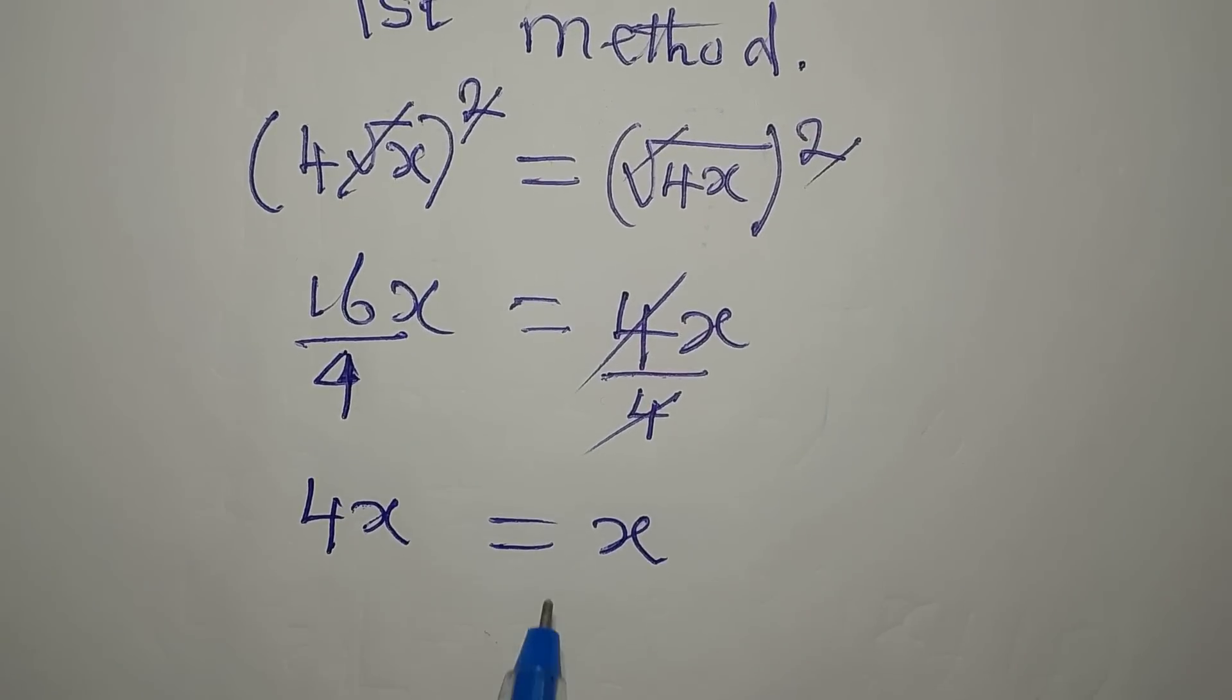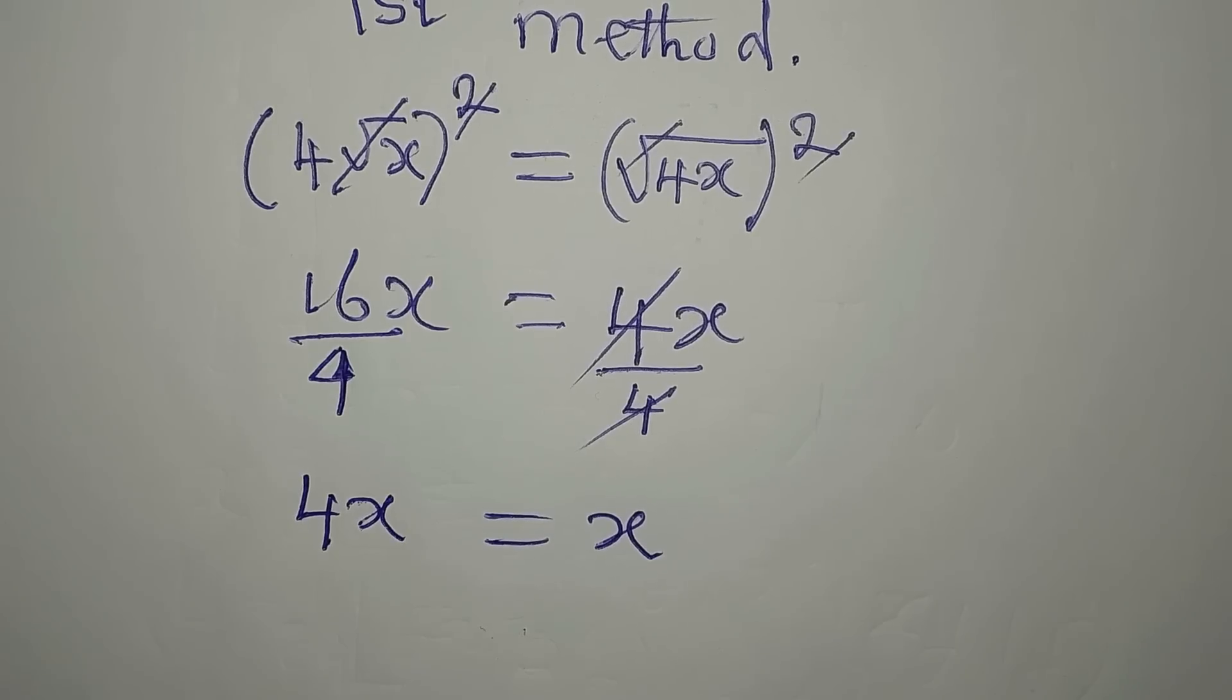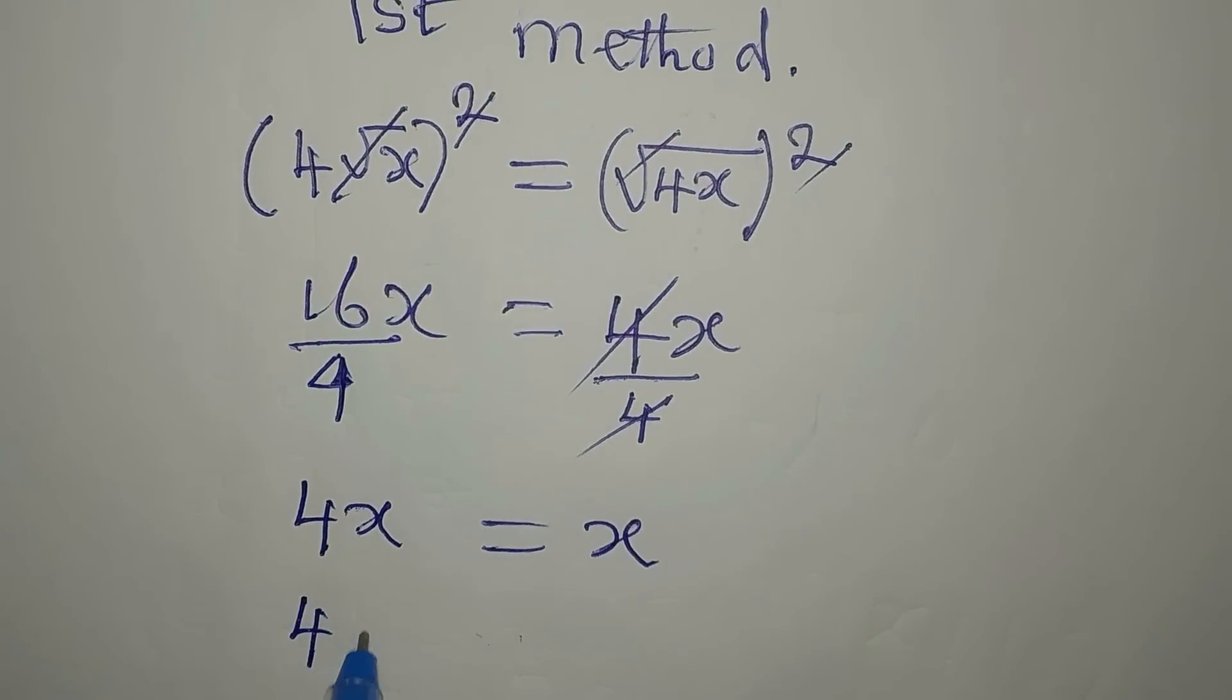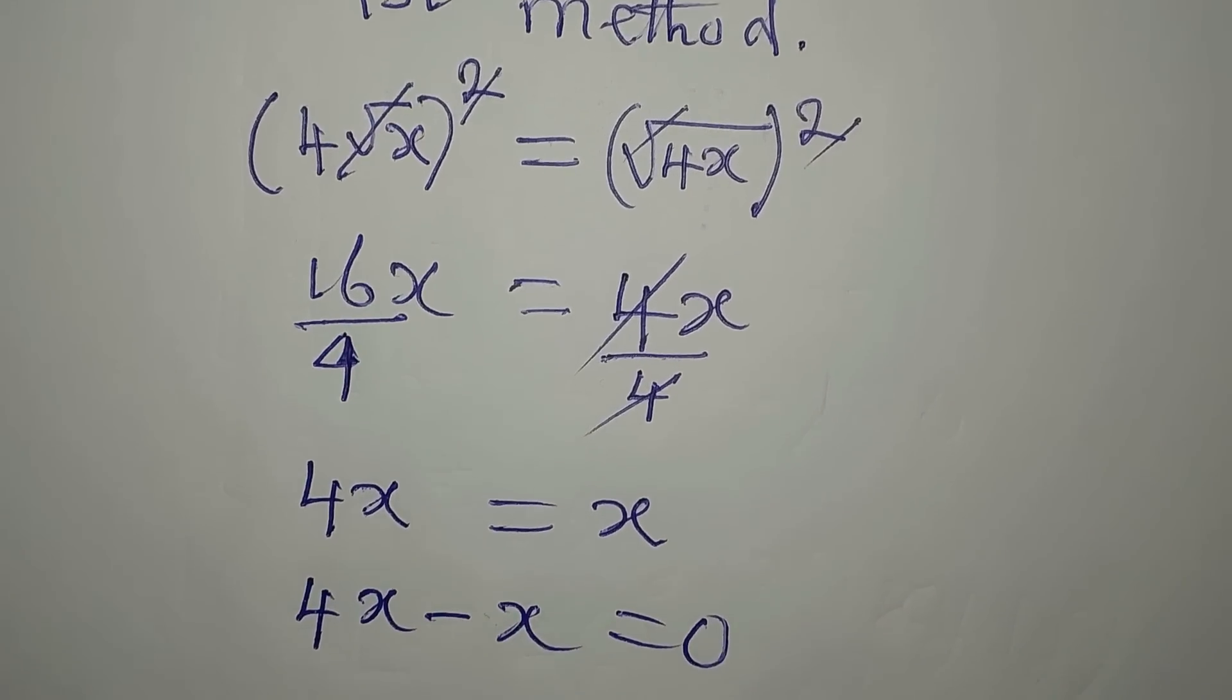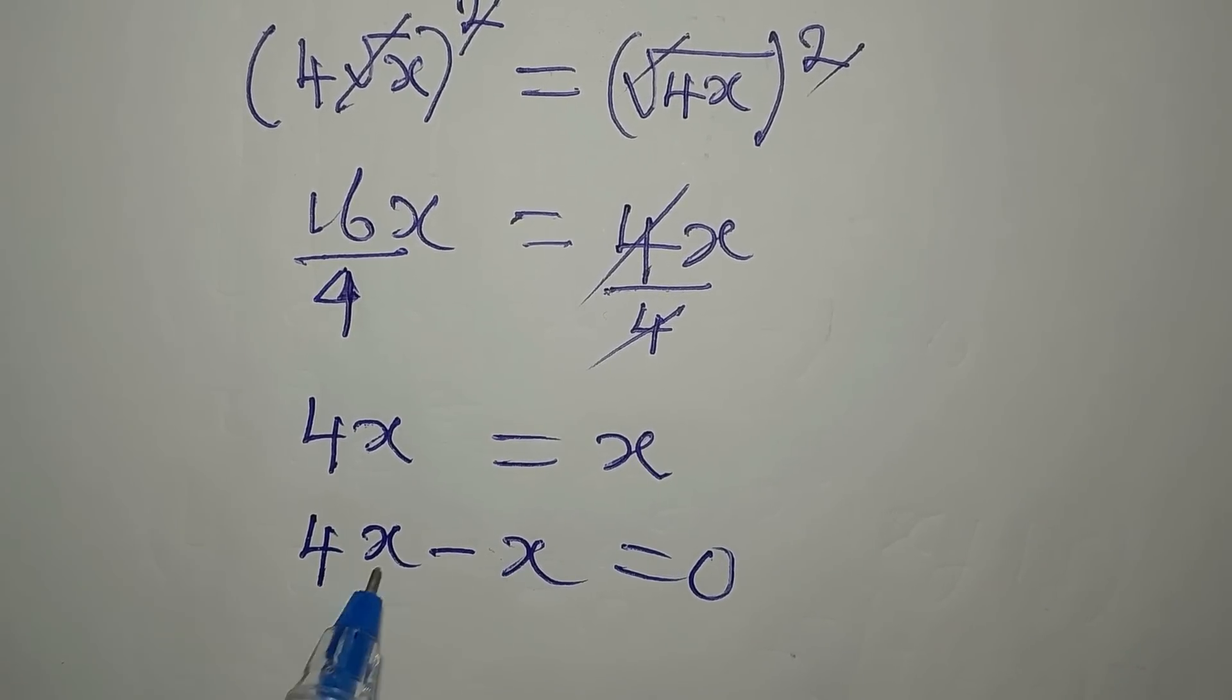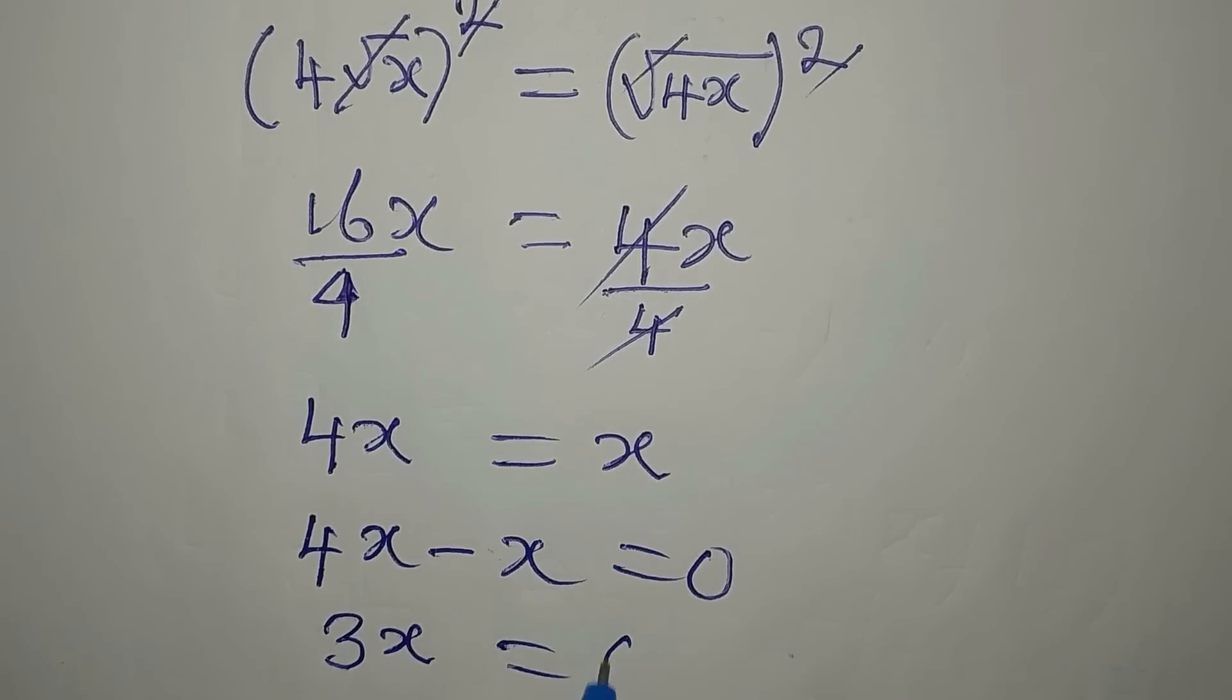Now, even at this level, do not divide both sides by x. You would rather bring this to this side. So we have 4x minus x equals 0. What we'll do now to get the value of x is to factorize. If you don't factorize, you can even simplify. 4x minus x will give us 3x, and that is equal to 0.